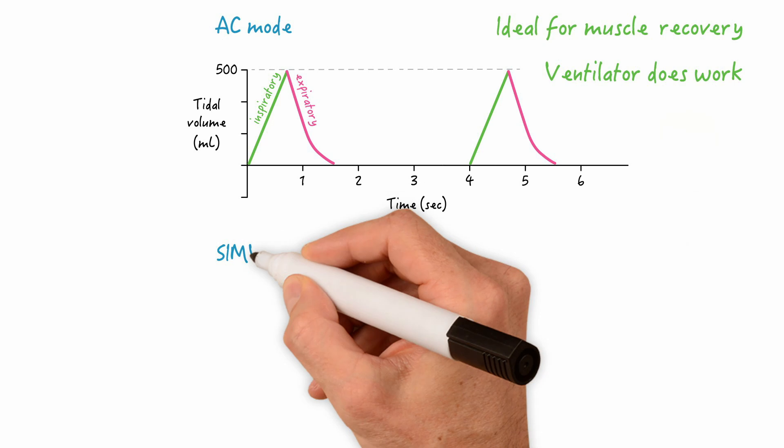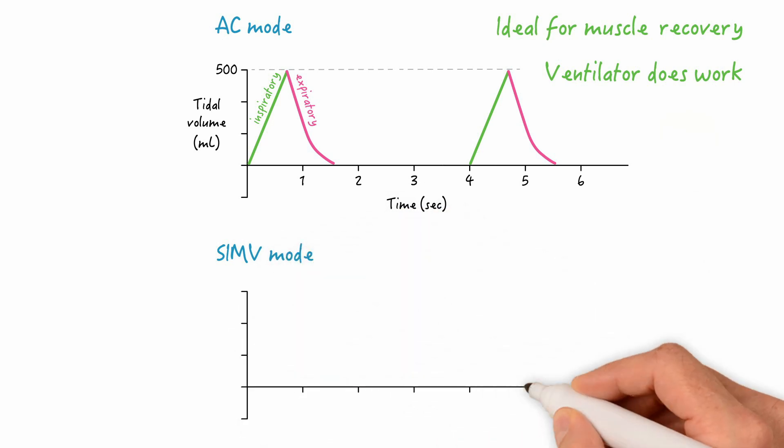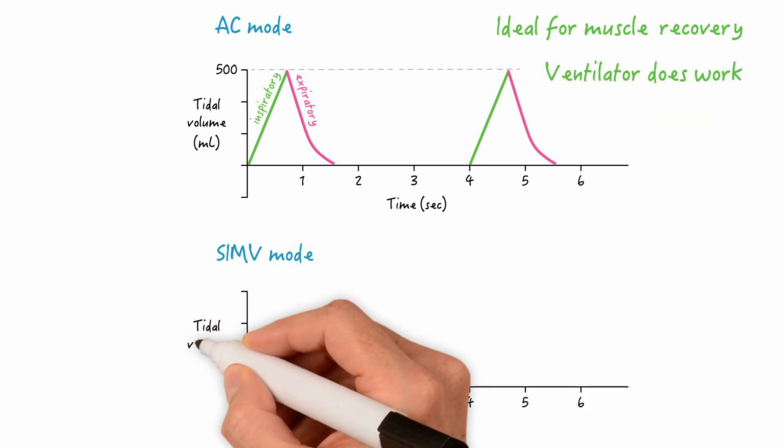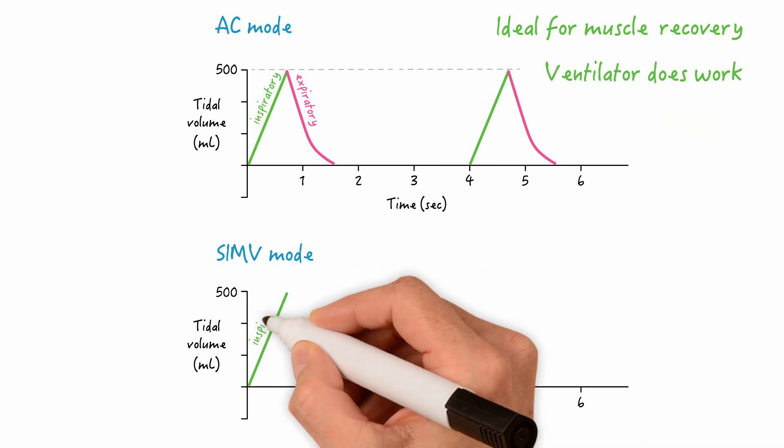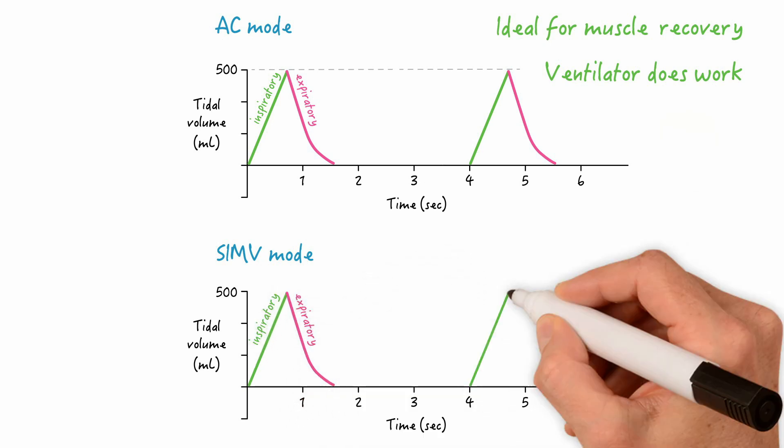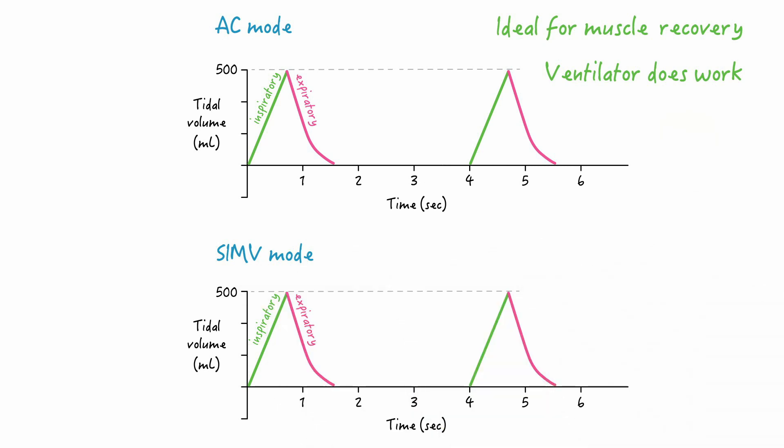So now let's compare this to the SIMV mode. In the SIMV mode, we can copy the same settings with a respiratory rate of 15 and a tidal volume of 500. And if you look closely, you'll see that a breath will be delivered every 4 seconds, just like in the AC mode. So you should be asking yourself this question: then what's the difference? Well, let's imagine what a patient-triggered breath would look like at the 2 second mark in both of these modes. And remember, initially, this patient most likely will not have adequate muscle strength since they probably have an acute ventilatory muscle dysfunction and fatigue.